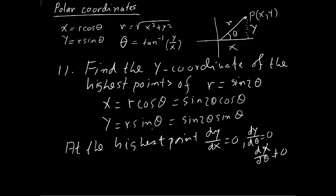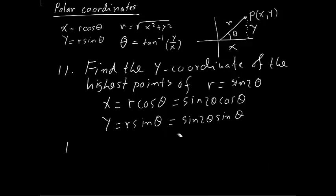We take the derivative of y with respect to theta. To avoid multiple angles, I write 2 sine theta cosine theta times sine theta, which gives 2 sine squared theta cosine theta.